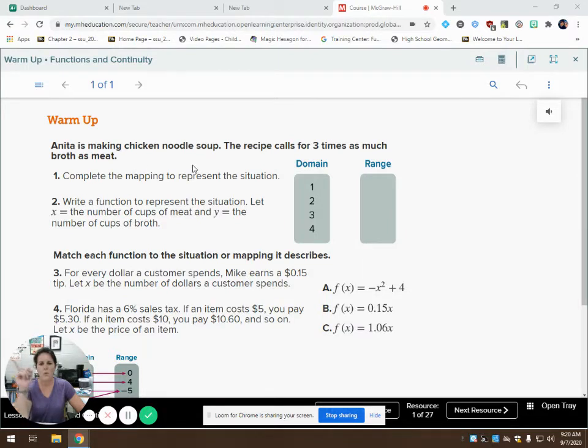You have one piece of meat, you've got three cups of broth for that. So if she has one as her domain, then the range would be three. So if she has two pieces of meat, or two chunks of meat, whatever the case may be, then how much broth is she going to have?